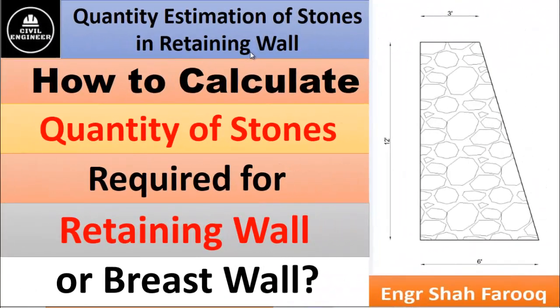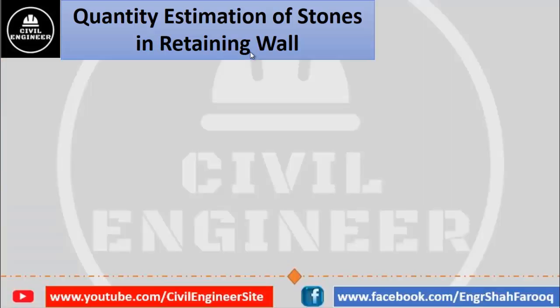A retaining wall is a structure constructed to retain soil or water. It can be built using different construction materials like concrete, brick masonry, and stone masonry. Hello dear friends, I am engineer Shahparukh and you are watching your own YouTube channel Civil Engineer. In this video we are going to discuss quantity estimation of stones required to construct a given retaining wall.